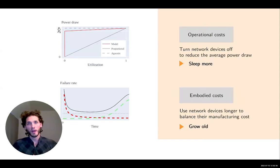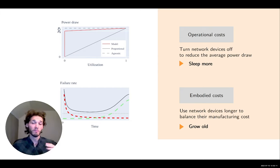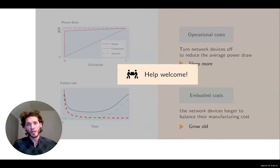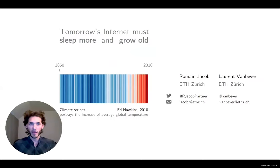To summarize: today I pitched two ideas about improving internet efficiency — reducing the operational cost by letting devices sleep more, and reducing the embodied cost by simply using devices for longer. This is a pretty massive agenda with a lot of work to be done. We have some initial ideas, but only 24 hours per day. If you're interested, feel free to reach out to us. I'm happy to take one or two questions.